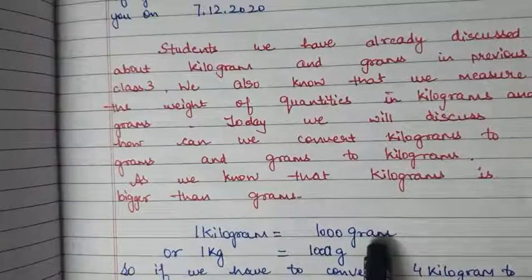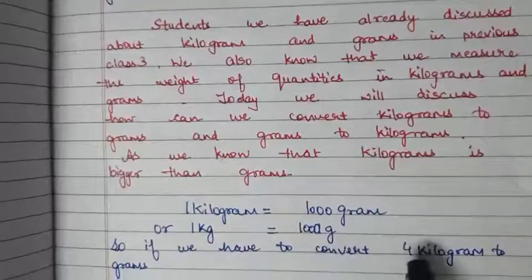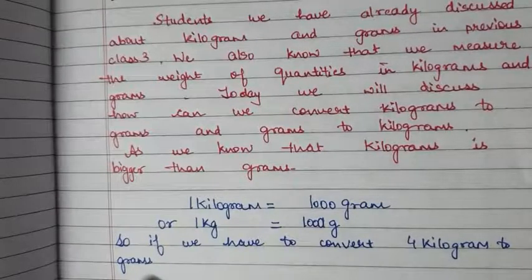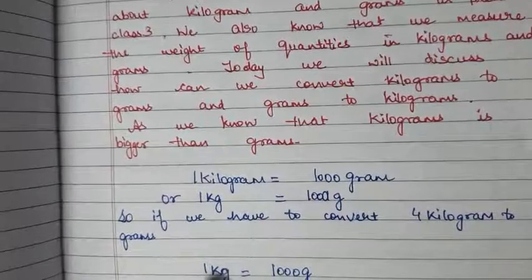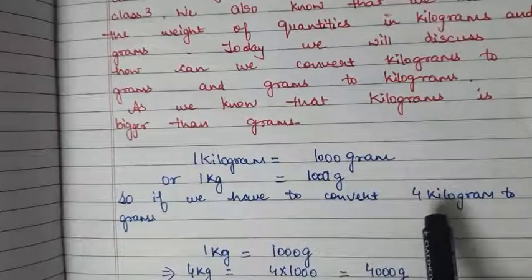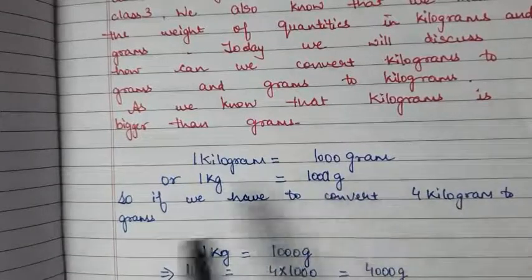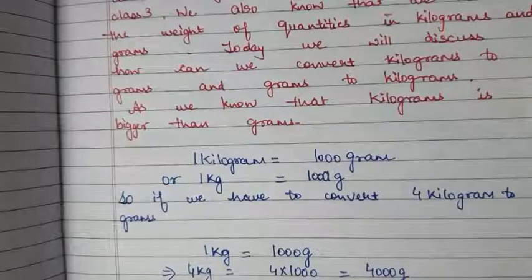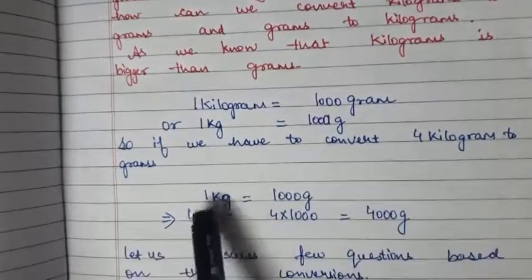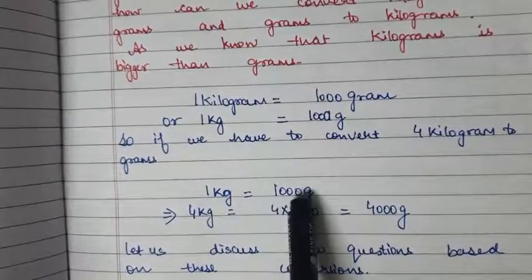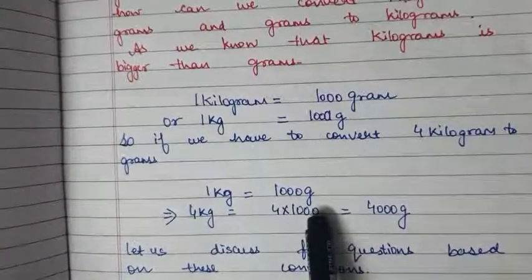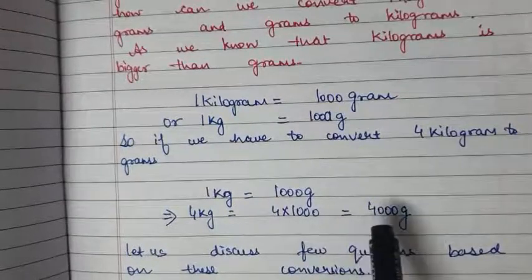So it means if we have to convert 4 kilograms into grams, how will we convert? We know that 1 kilogram is equal to 1000 grams. Now we have to convert 4 kilograms to grams. So 4 kilograms will be 4 into 1000, which gives us 4000 grams.